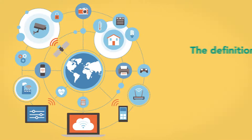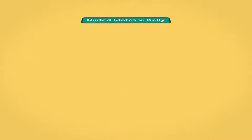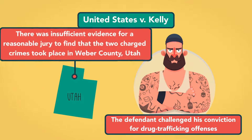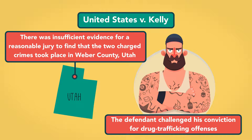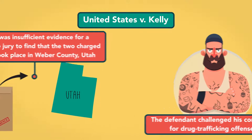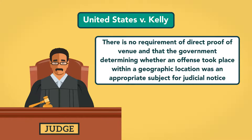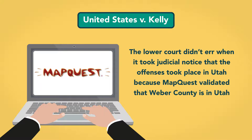With the advent of the internet, the definition of reliable source has changed. In United States v. Kelly, the defendant challenged his conviction for drug trafficking offenses, asserting that there was insufficient evidence that the two charged crimes took place in Weber County, Utah, since no evidence was introduced that the crime happened in that county. The court used MapQuest, a popular online web mapping system, to take judicial notice that the locations at issue were in that county. The court held that there is no requirement of direct proof of venue, and that the lower court did not make an error when it took judicial notice that the offenses took place in Utah, because MapQuest validated that Weber County is in Utah.